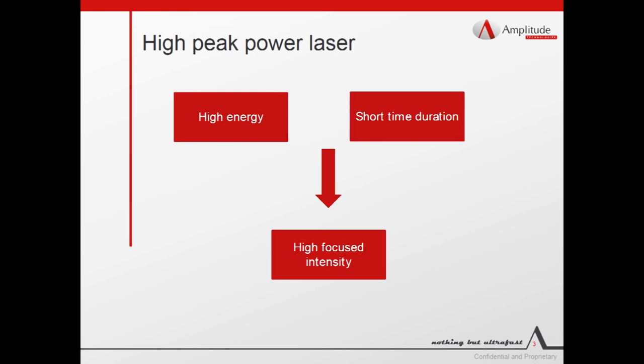When we talk about high peak power laser systems, we are referring to a system which is able to provide laser pulses with two main features: high pulse energy from millijoule to joule and short time duration. Beam intensity can reach values higher than 10^15 gigawatt per centimeter square on the beam focus.